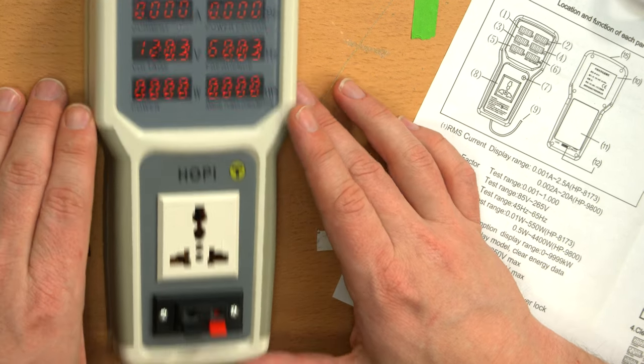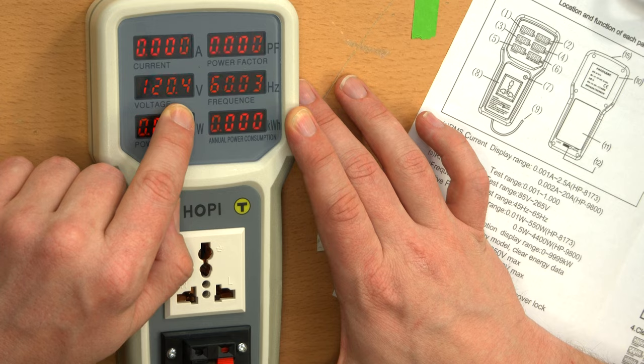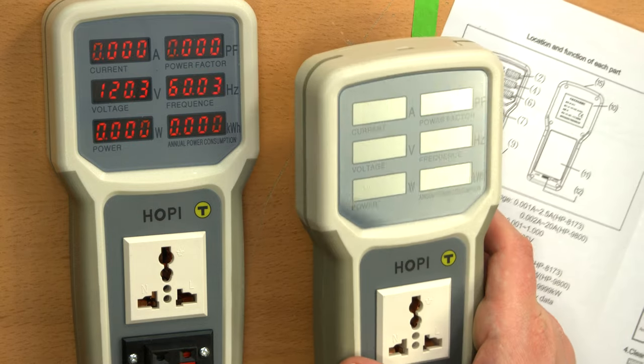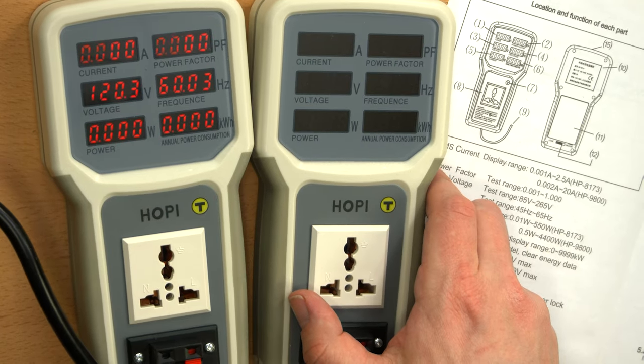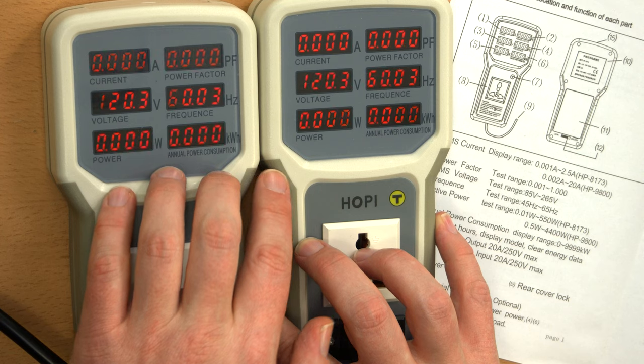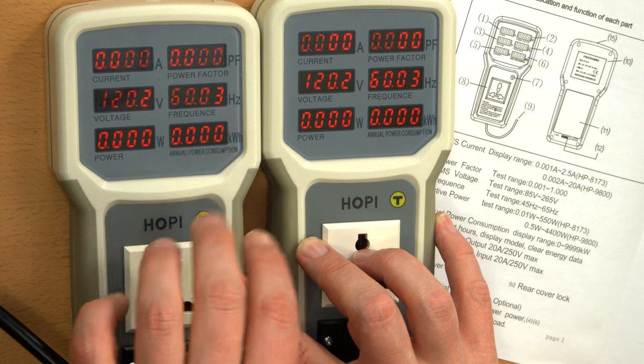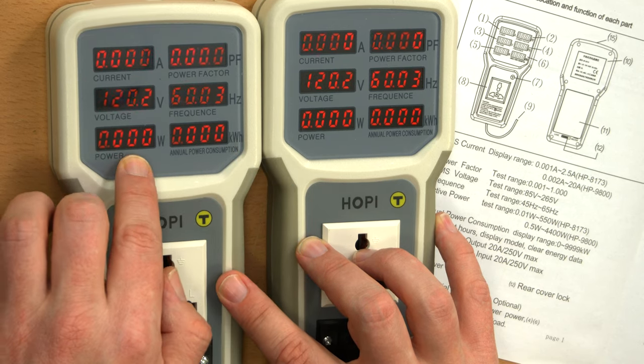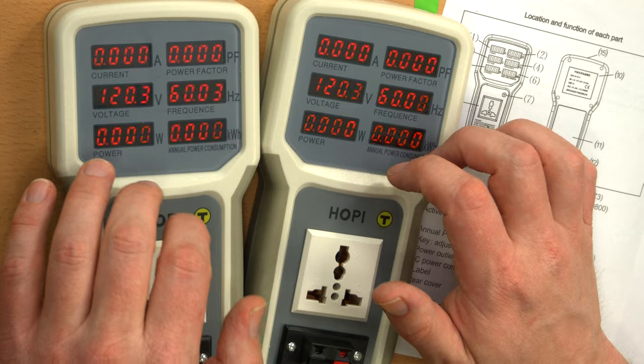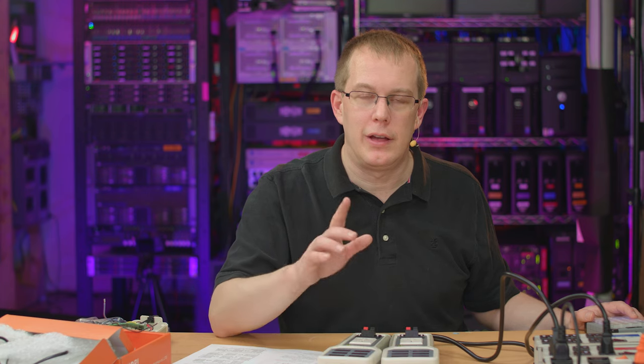So now it's powered on because the current is zero because nothing is hooked up to it. Voltage 120.4 volts. Now I'm interested. I'm going to plug this other meter into the same power strip. And I just want to see if they correlate and they do 120.3 volts and 60.03 Hertz frequency. So I am going to compare these two just to see if there's variances and tolerances. It seems pretty good so far. I'm actually impressed with that. So let me get something to plug into these.